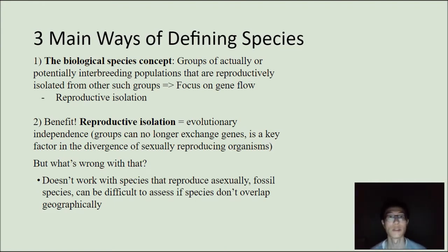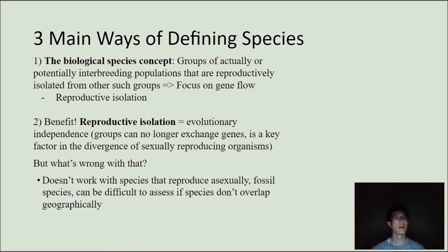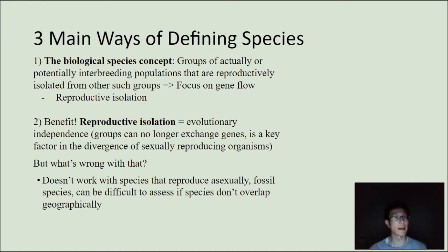The downfall of the biological species concept, however, is that it doesn't really work with species that reproduce asexually — bacteria, for instance, reproduce asexually. The biological species concept has a strong focus on gene flow and sexual reproduction, which obviously can't really apply to asexual organisms. And if you're looking at fossil organisms, that can be very difficult to assess since you can't really breed fossils. So the biological species concept is one of the three main ways of defining a species.